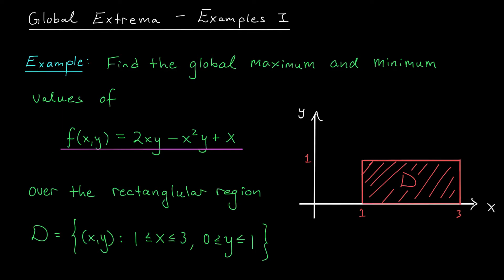Hey there folks, and welcome back. In our last lesson, we discussed methods for finding the global max and min of a function f(x,y) over some closed and bounded region in its domain. In this lesson, we're going to put those methods to use in an example problem, which will hopefully make the whole process much clearer. Here, we're looking for the global max and min of the function f(x,y) = 2xy - x²y + x.